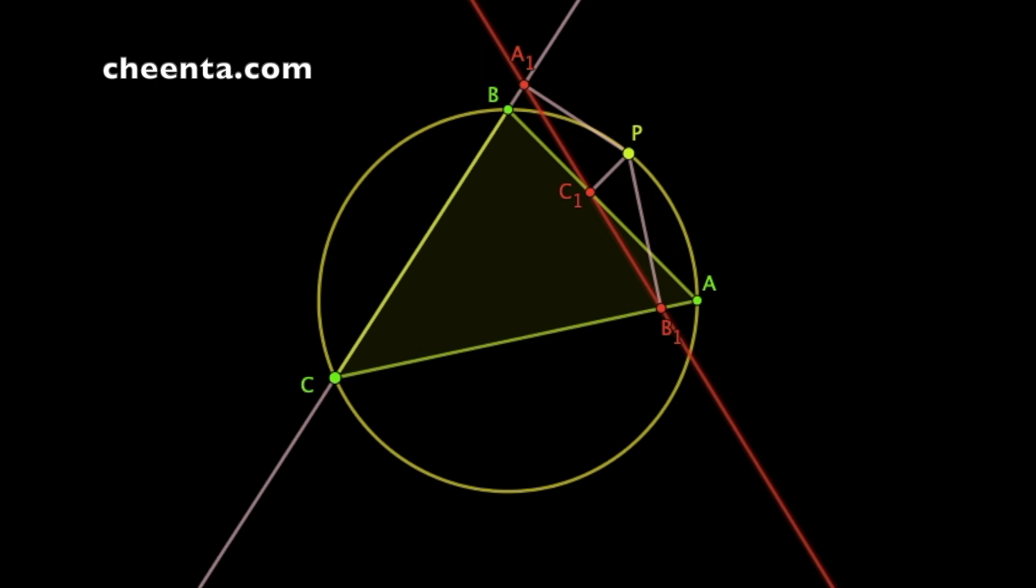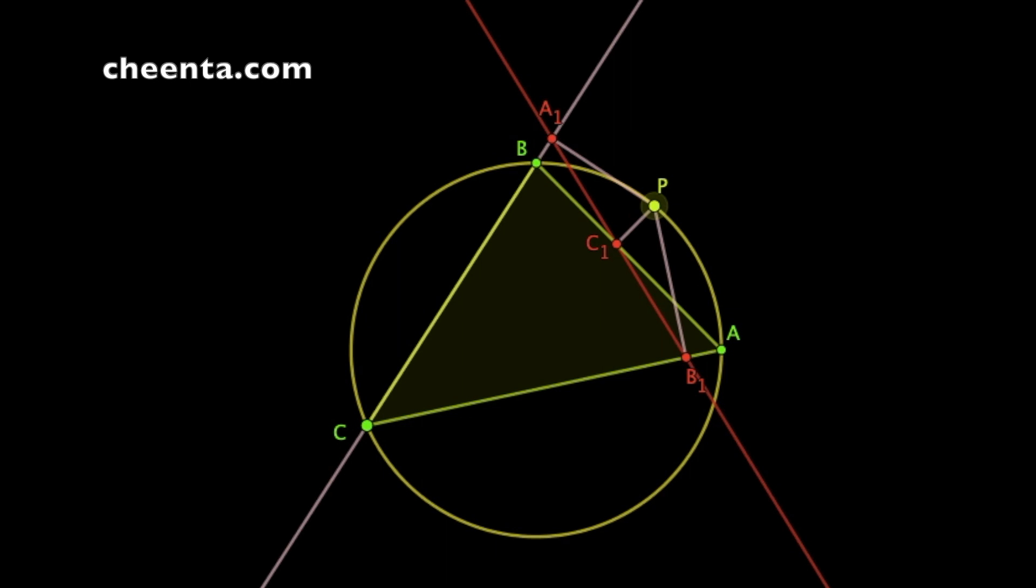In fact this is not hard to prove. Why don't you try to prove this using basic angle chasing. Alright so this line on which A1, B1 and C1 are located is known as the Simpson line. Apparently someone else called Wallace discovered the Simpson line.